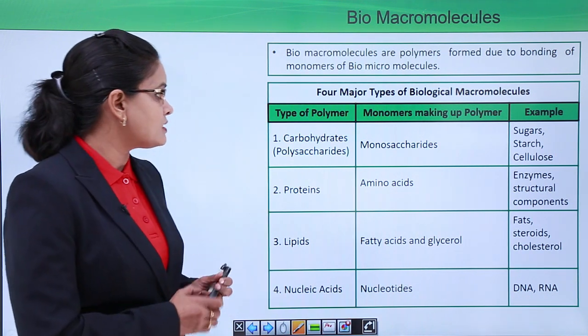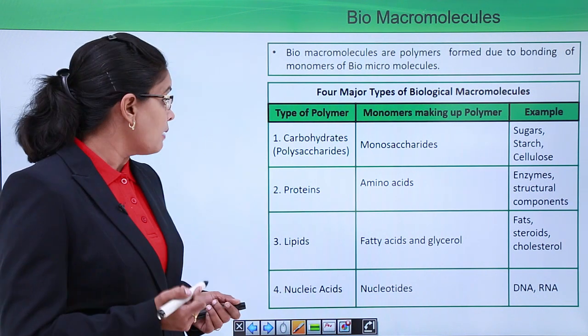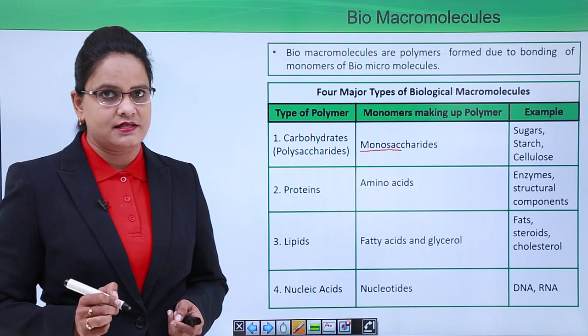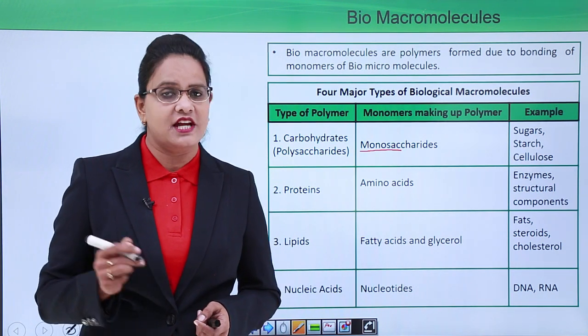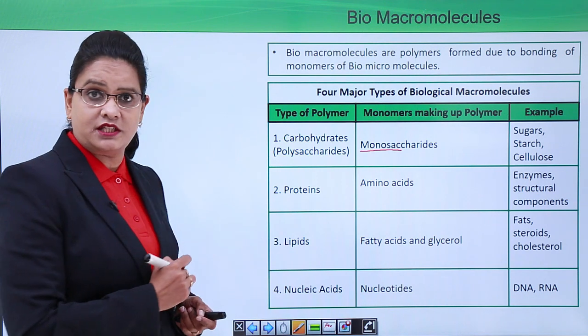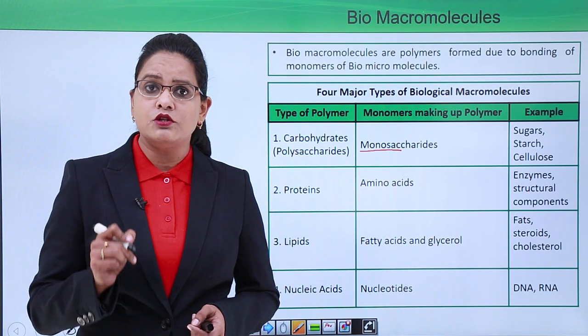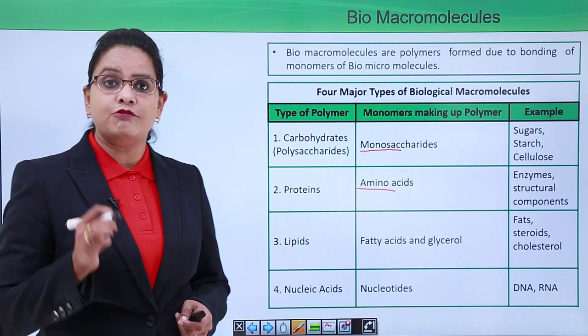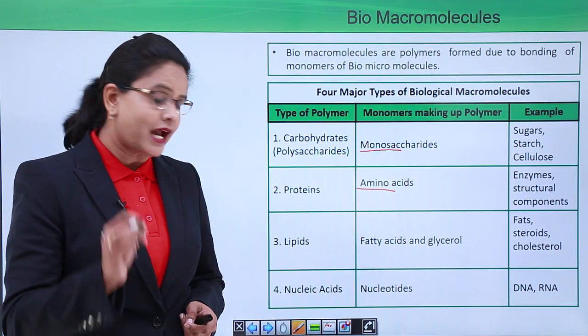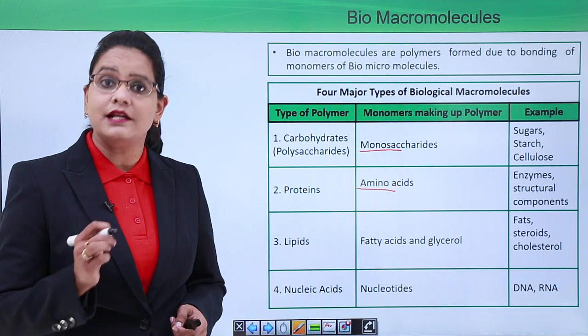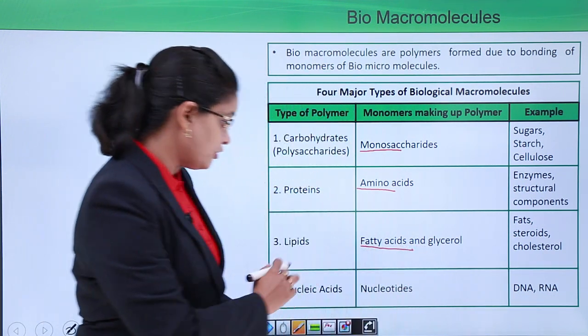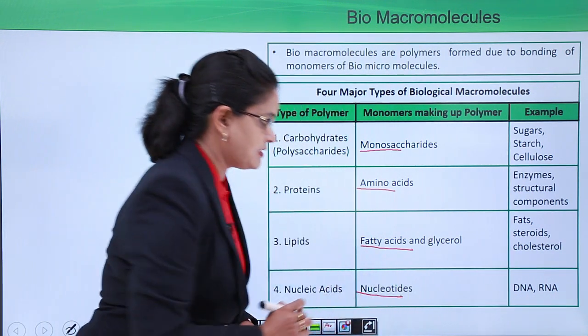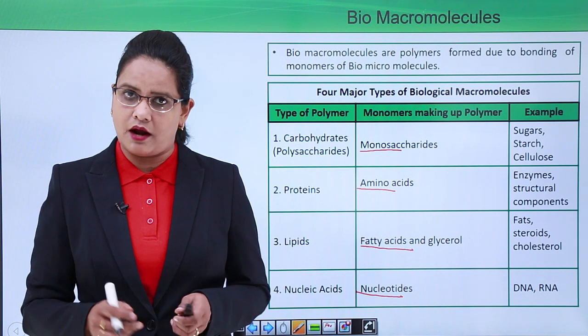Let us now have a look at the monomers which form these biomacromolecules. First, carbohydrates are formed by monomers called monosaccharides, and the examples are sugar and starch. Then proteins, the monomers for proteins are amino acids. Similarly for lipids, the bio micro molecules are fatty acids and glycerol. And for nucleic acids the monomers are nucleotides, and the examples are DNA and RNA.